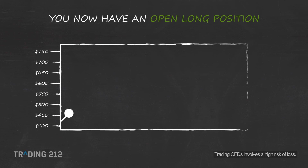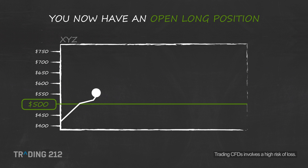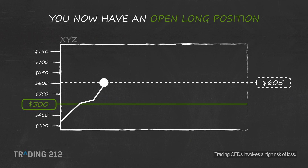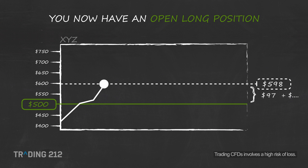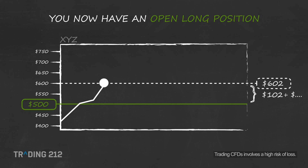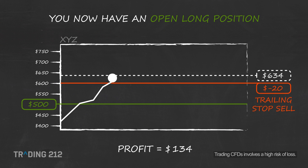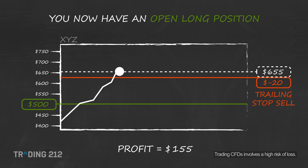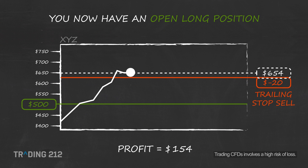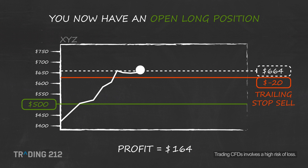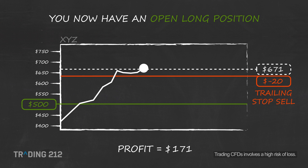Let's say that you have bought stock in company XYZ at $500. The price is currently at $600. You would like to secure this potential profit and keep accumulating more while minimizing your risk. So you decide to set a trailing stop at $20 below the current price. Keep in mind that the distance needs to be big enough so that small price fluctuations do not result in premature trade execution, but small enough so that it doesn't consume all your potential profit.